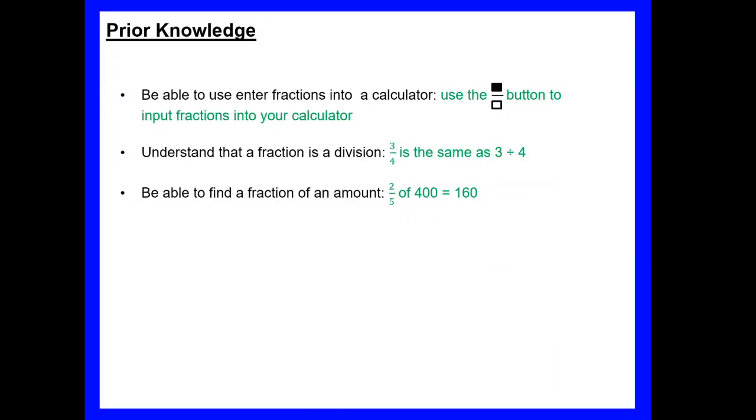Prior knowledge then, things we need to have before we can start this lesson. You need to be able to use your calculator to enter fractions, so using the fraction button. If you have a Casio calculator the button should look like the one on the screen. If not, you may have a different type of button, it may say something like a b c on it, but you should know where the fraction button is on your calculator.